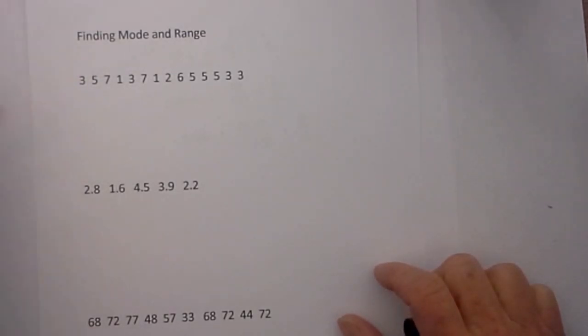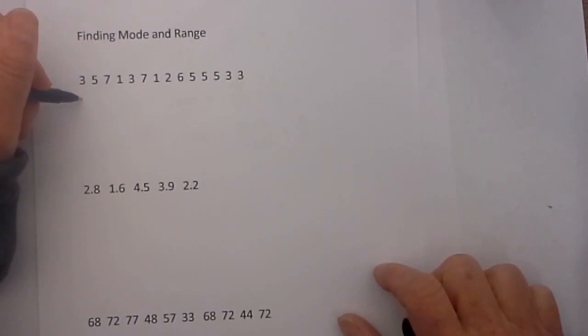In order to complete these, the easiest thing to do and to help avoid mistakes is just to rewrite the numbers from least to greatest. I will put a check by each one as I rewrite it.